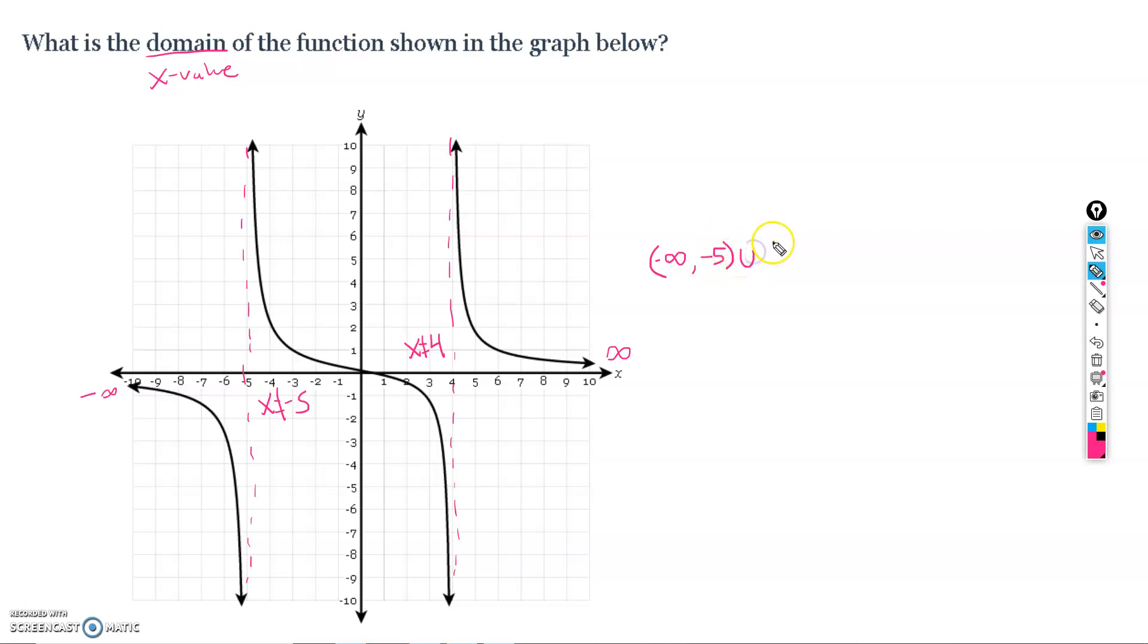So, union with, and then we're going to try to pick up again from negative 5. And from negative 5, we were all cool until positive 4, where again, we hit another asymptote. And after we hit the positive 4 asymptote, we then carried on, and we went all the way right until positive infinity.